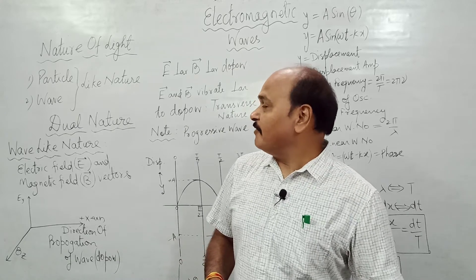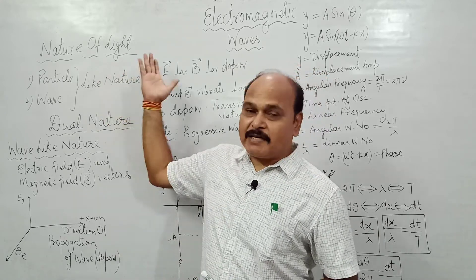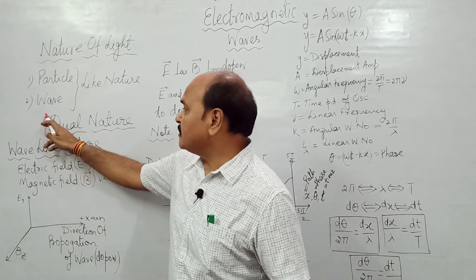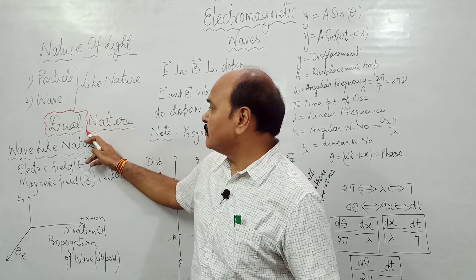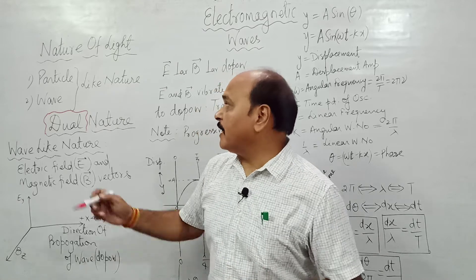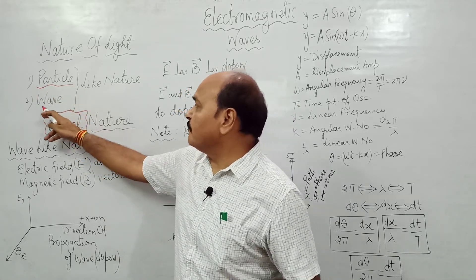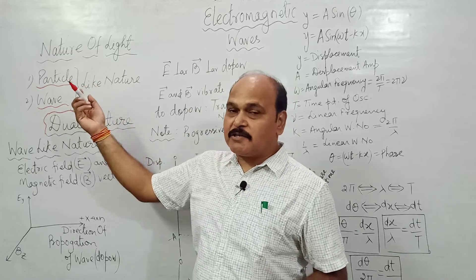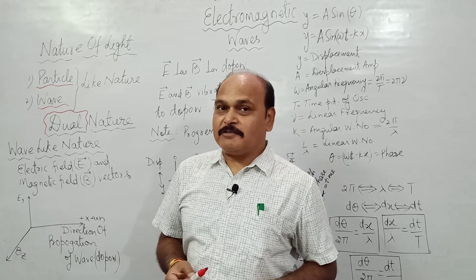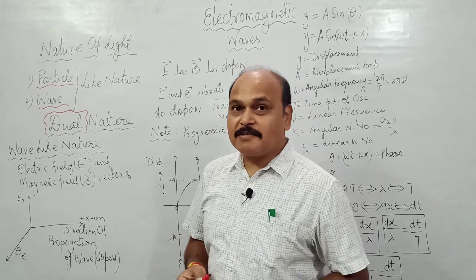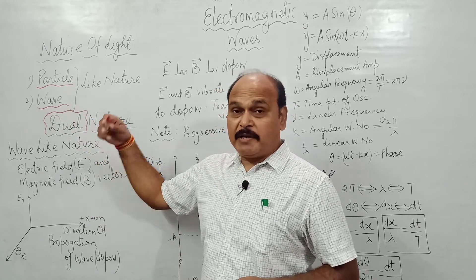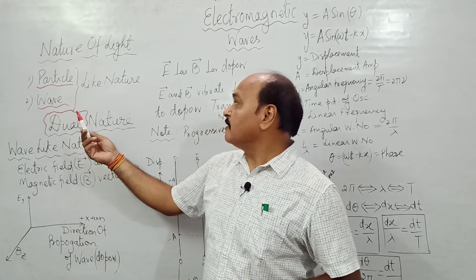As far as the nature of light is concerned, we believe that light has a dual nature. Light has two different natures: one is called particle-like nature and the other is called wave-like nature. This particle-like nature was put forth by Newton through his very famous Newton's Corpuscular Theory.